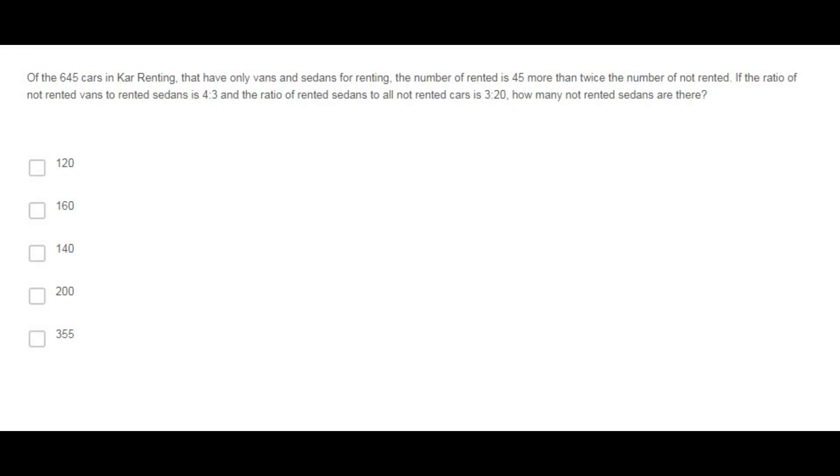Of the 645 cars in car renting that have only vans and sedans for renting, the number of rented is 45 more than twice the number of not rented. If the ratio of not rented vans to rented sedans is 4 to 3 and the ratio of rented sedans to all not rented cars is 3 to 20, how many not rented sedans are there?